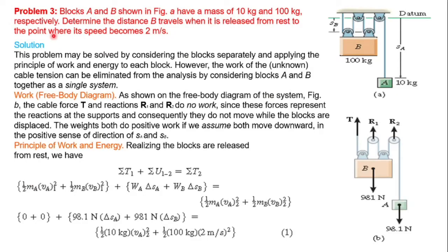This is a work-energy principle based numerical problem. Blocks A and B are shown in the figure. Block B has a mass of 10 kg. We need to determine the distance block B travels when it is released from rest, given the condition that block B reaches a velocity of 2 meters per second.